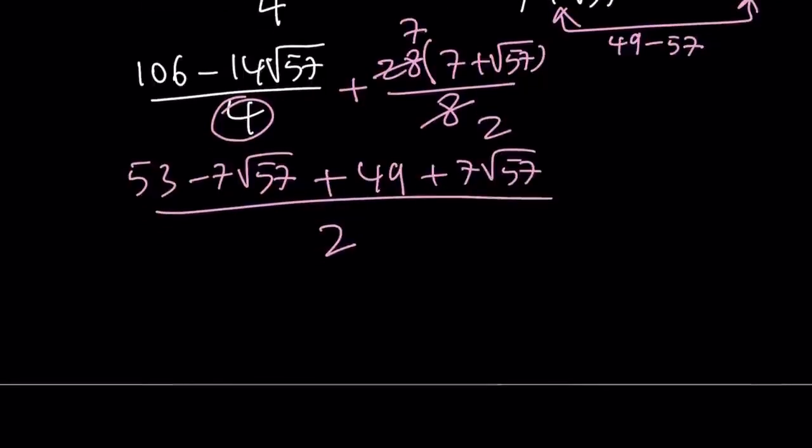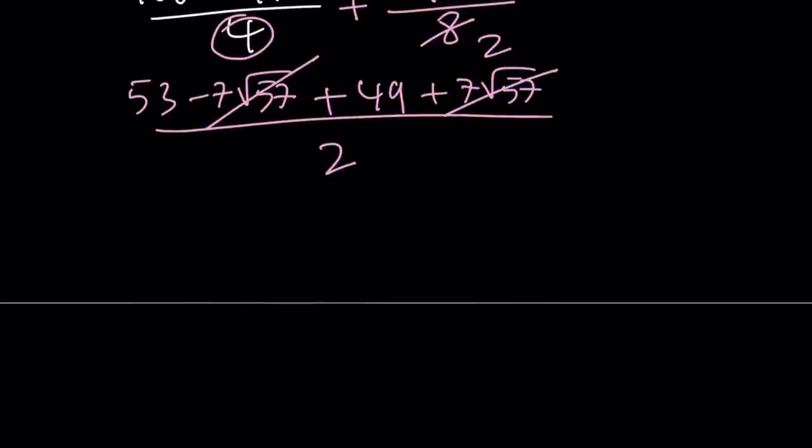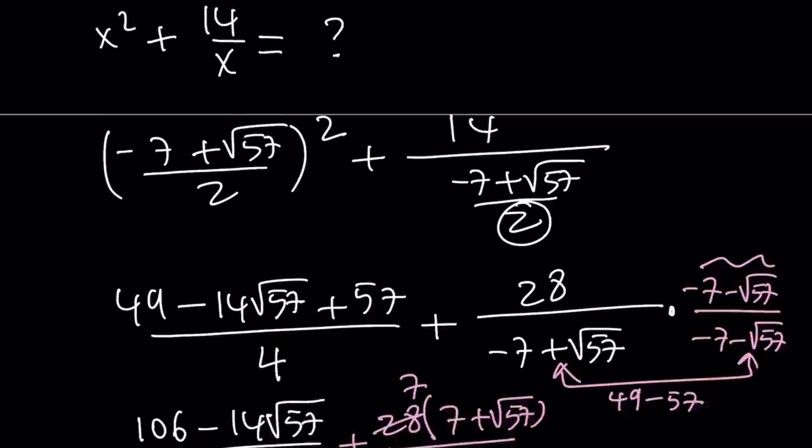This is going to give us 49 plus 7 root of 57, and that's going to be all over 2. Notice that these two terms cancel out, which is very important. We want to get a nice answer. 53 plus 49 is 102, and if you divide it by 2, you're going to get 51. We got a numerical answer, and we only use the first root.